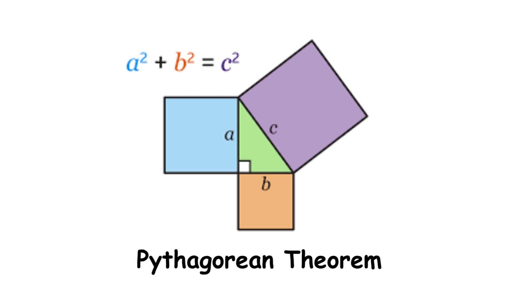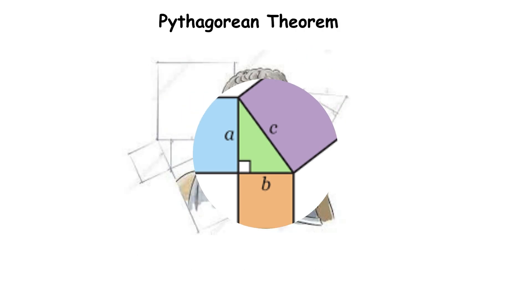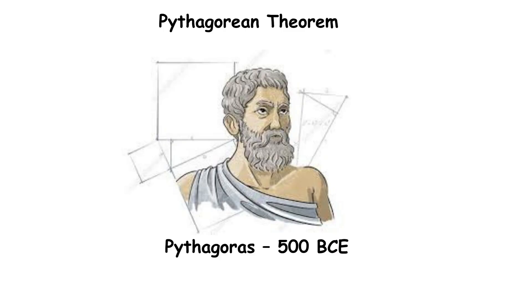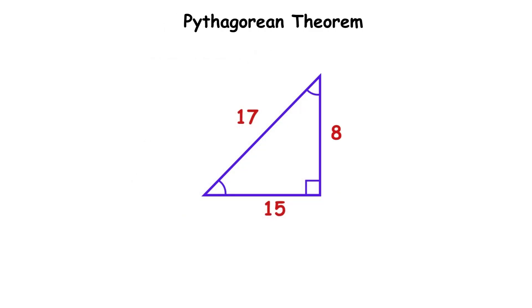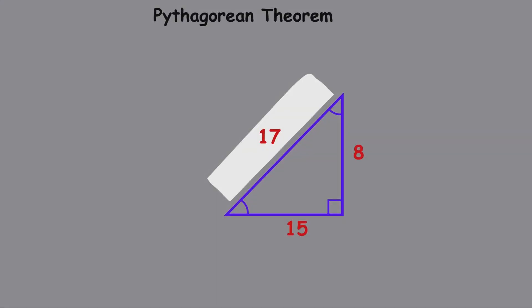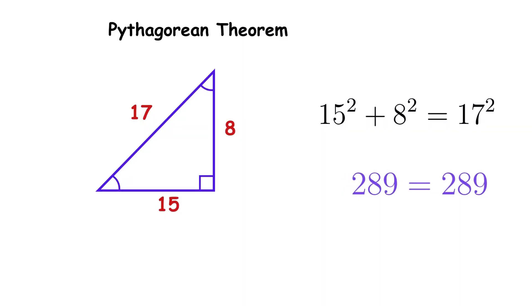Pythagorean Theorem. This ancient theorem discovered by the Greek mathematician Pythagoras around 500 BCE is one of the most famous mathematical principles ever created. It states that in any right-angled triangle, the square of the longest side equals the sum of squares of the other two sides.